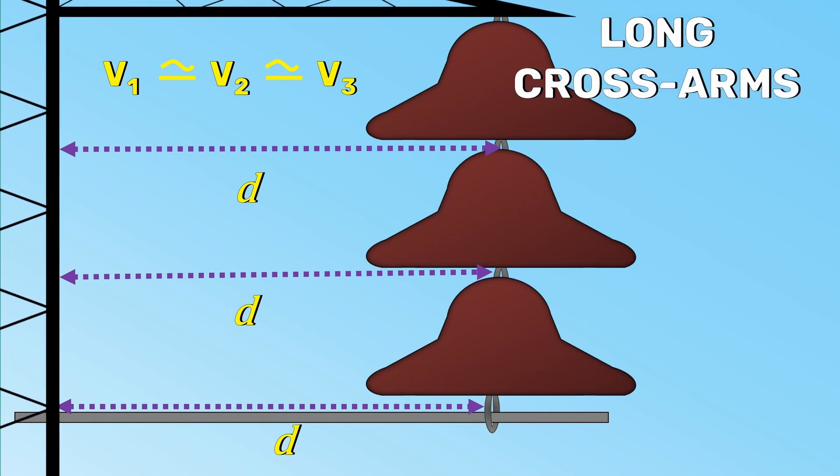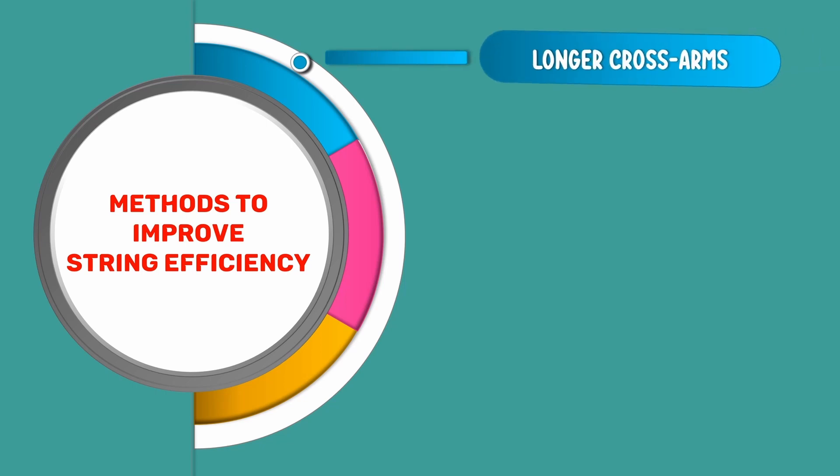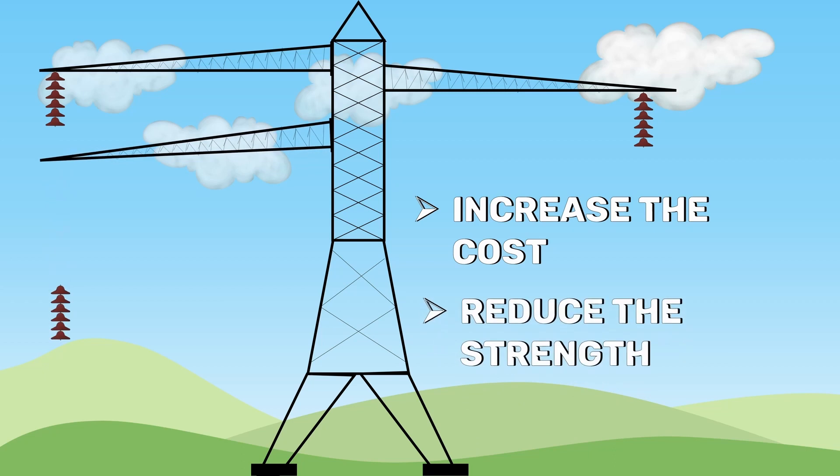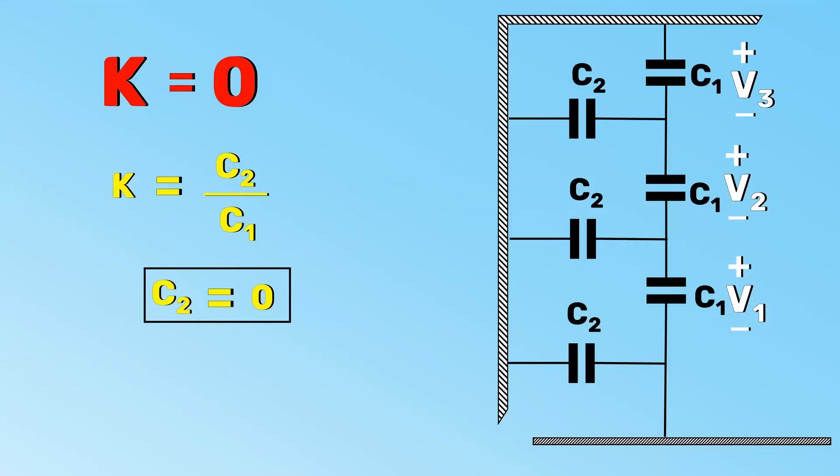Yes, the first method to improve the string efficiency is by using longer cross arms. But the problem is that the long cross arms will increase the cost and also it will reduce the strength of the tower. Therefore, in practice, K equals 0.1 is the limit that we can achieve by this method.